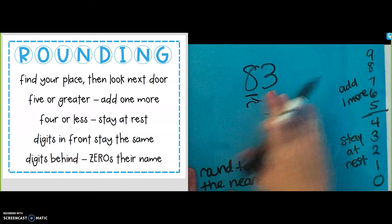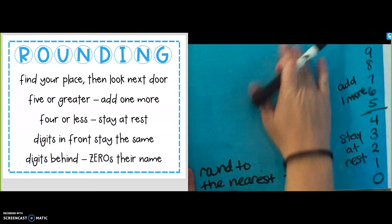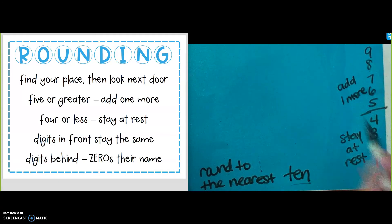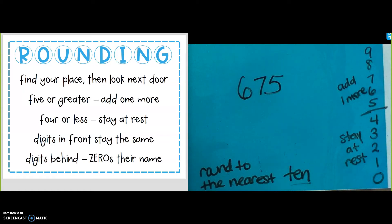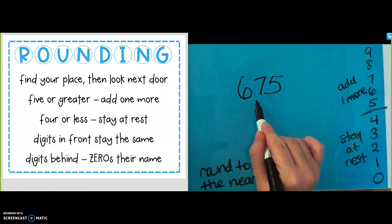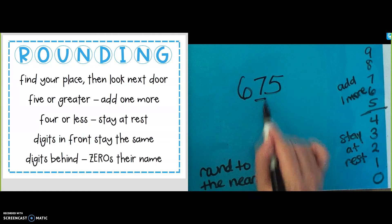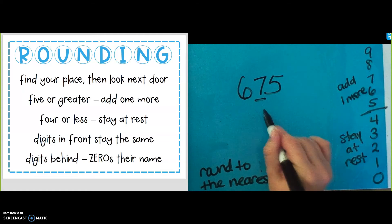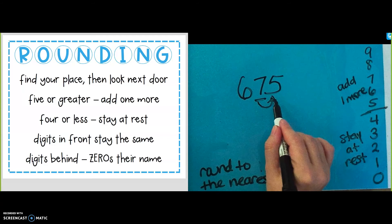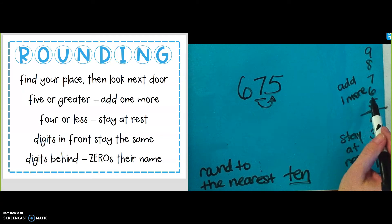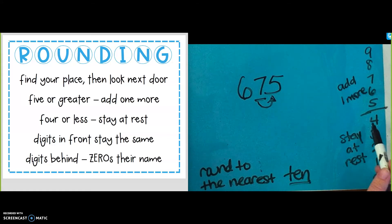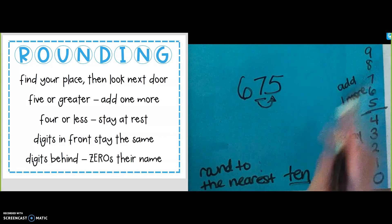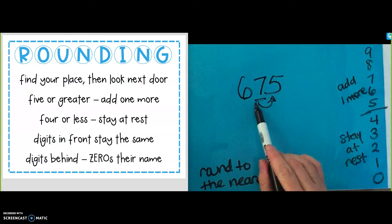Let's try another one. This may seem confusing at first, but once you practice some, you will get it. All right, let's round to the nearest 10 again. I have 675. I'm still rounding to the nearest 10. Again, find your place — the tens place — look next door. If the number next door is 5 or greater, add one more to the 70. If it is 4 or less, we stay at rest. Find your place, the tens place, look next door.